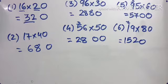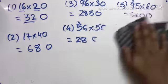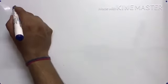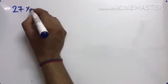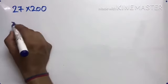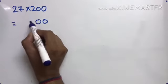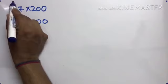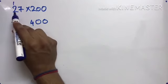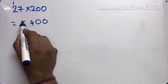Now let us try for 200, 300, 400, and so on till 900. If such numbers come, what do we do? 27 times 200. So how many zeros? Two zeros. 2 times 7 is 14, write 4, carry 1. 2 times 2 is 4 plus 1 is 5. 5400.